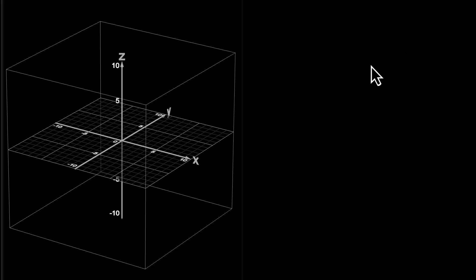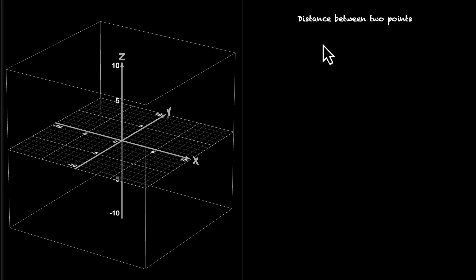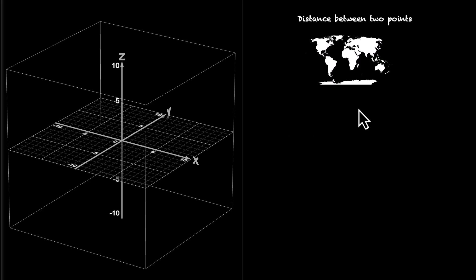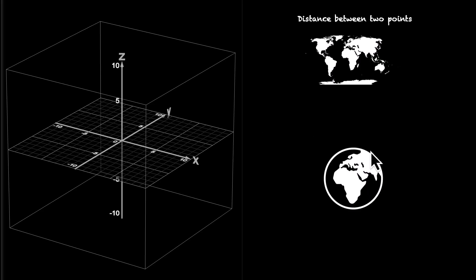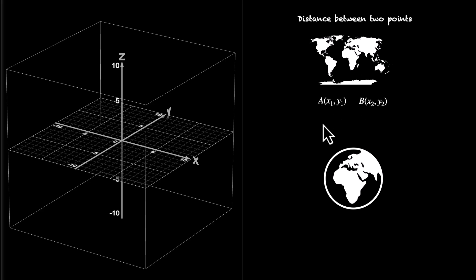In this video, we'll learn how to find the distance between two points in 3D. 3D works very similar to how 2D works, so we'll look at 2D and 3D together. In 2D, the distance formula for two points A and B is like this.